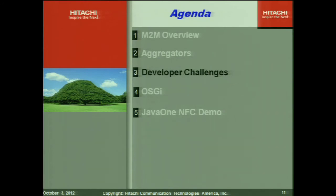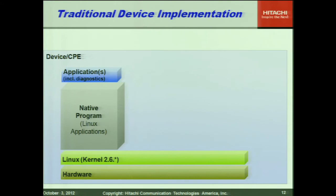So what are some of the developer challenges of building one of these aggregators? Typically, a lot of M2M development is done by embedded developers. They follow a traditional development model: I have my hardware, it usually has some sort of Linux kernel on it, I go do my apt-get for GCC, crank up my VI, start writing C code, maybe use Eclipse to compile and download it. Writing basically C code directly to the kernel — that's the way the majority of embedded development is still done today.